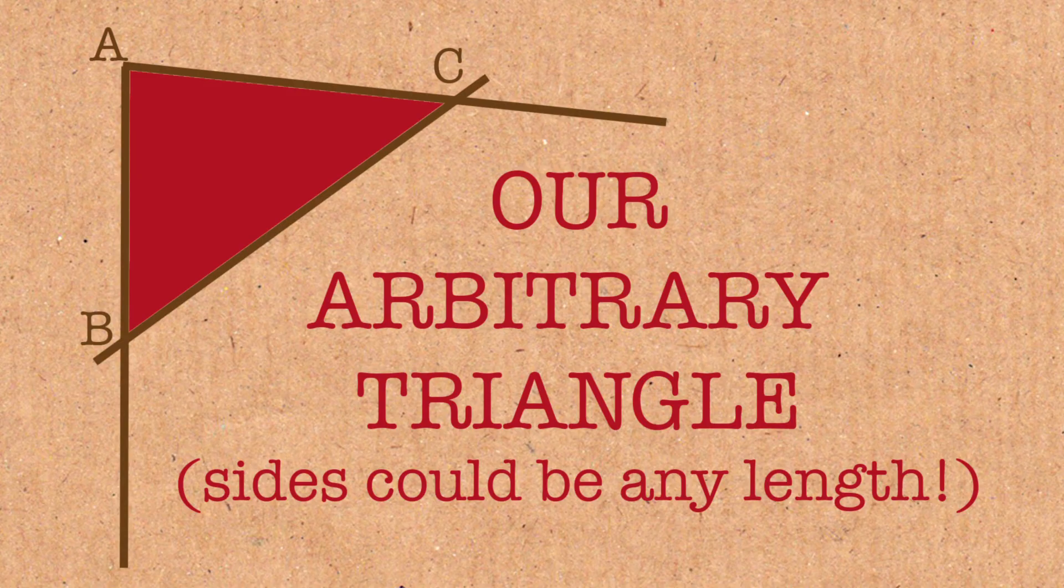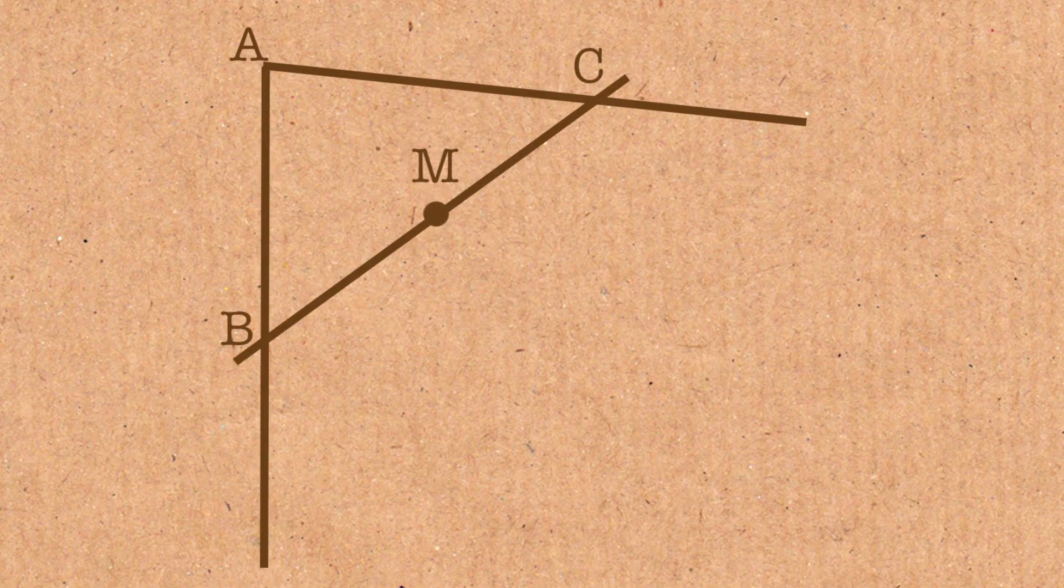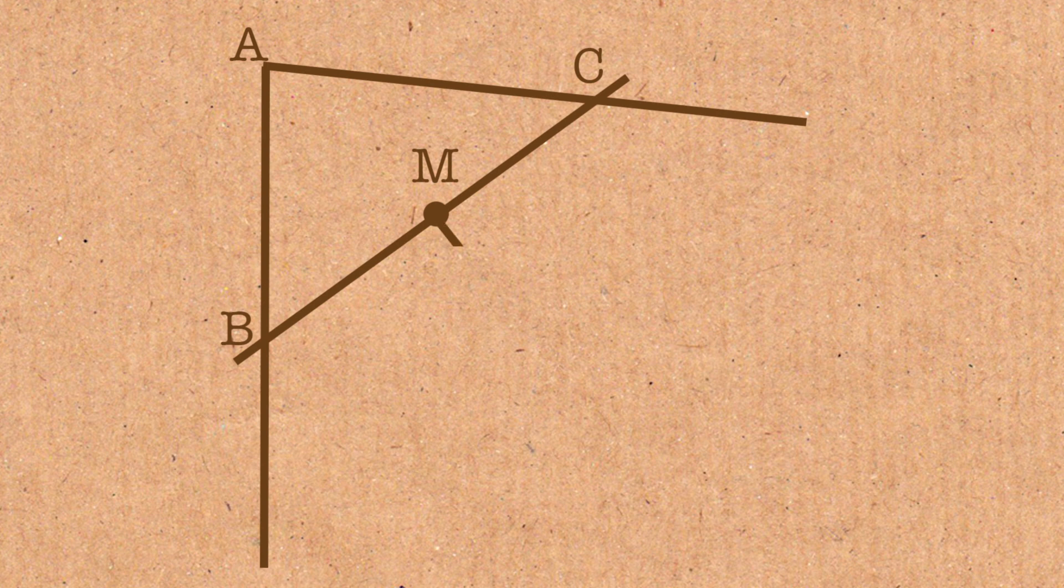Now I'm taking the middle point of the side BC, I call this M, and I draw the perpendicular bisector. So I'm drawing a line that's perpendicular coming out of M, going off in that particular direction, and of course we have a right angle here.